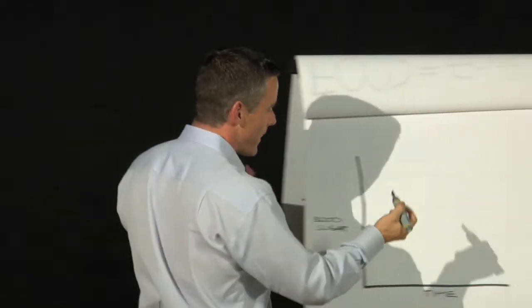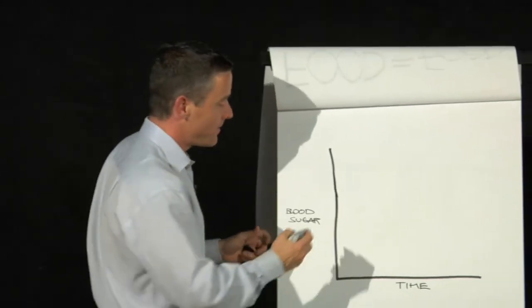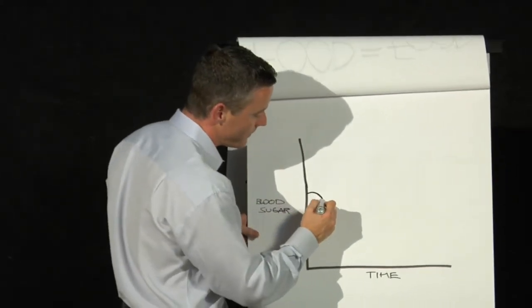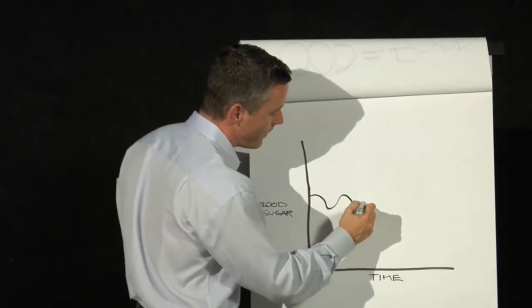So this is blood sugar over time. What happens if right now I'm hungry, so let's say my blood sugar drops a little bit and I eat some food and it goes up and down and up and down.